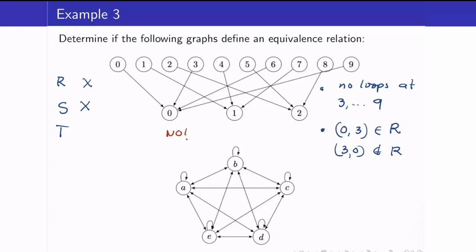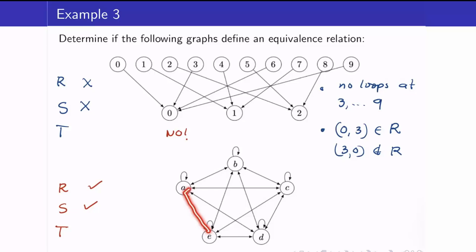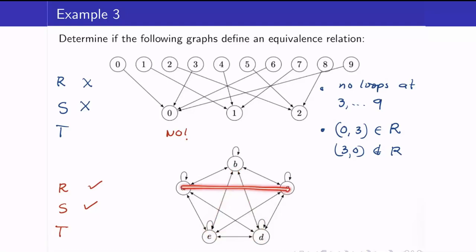How about the next example? Is it reflexive? Yes — we have vertices A, B, C, D, and E, and they all have loops. Is it symmetric? Yes, because the arrows are always two-way. Is it transitive? Notice that you always have a triangle path: E and A are related, A and B are related, and we have E and B. You can verify that for the rest, you always have a triangle formed. For example, if A is related to C and A is related to D, therefore D is related to C. This one will be an equivalence relation.